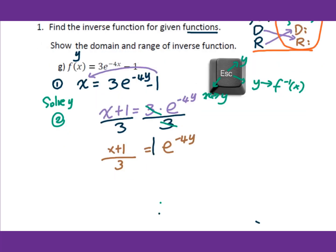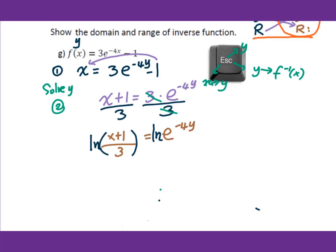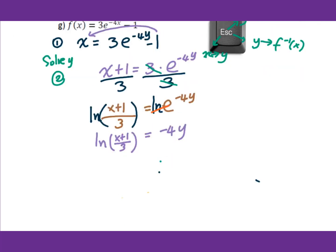Then take the natural log of both sides. The natural log of e cancels, leaving negative 4y equals natural log of (x plus 1) over 3. Divide by negative 4 to get y equals negative 1 over 4 times natural log of (x plus 1) over 3.